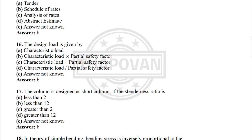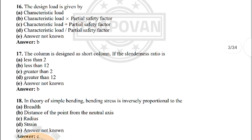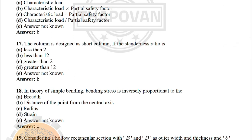Next: the design load is given by — the correct answer is: characteristic load × partial safety factor. Next: the column is designed as a short column if the slenderness ratio is — the correct answer is: less than 12.